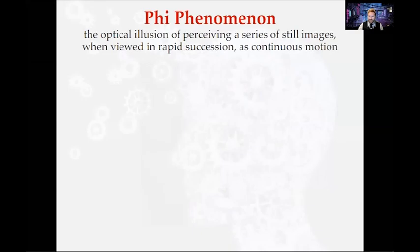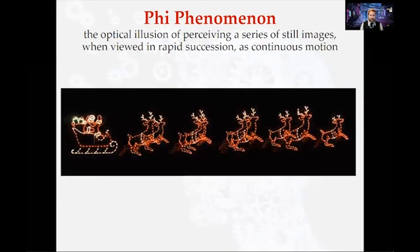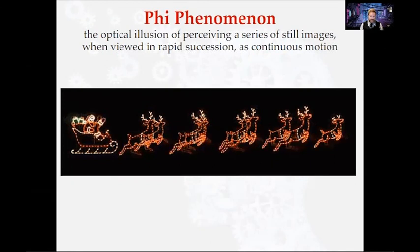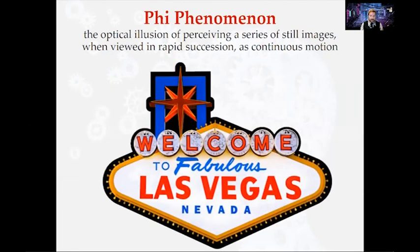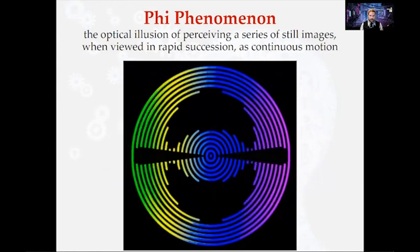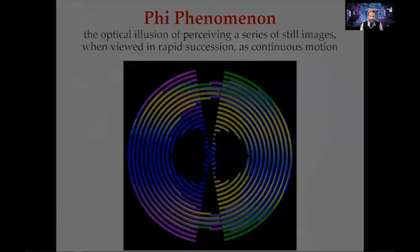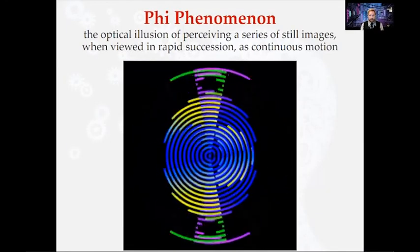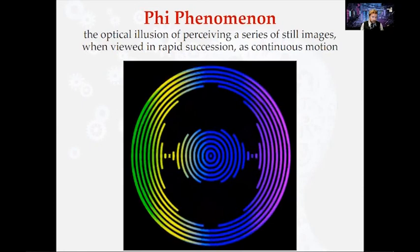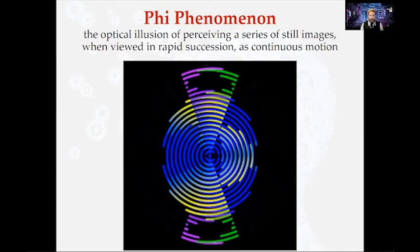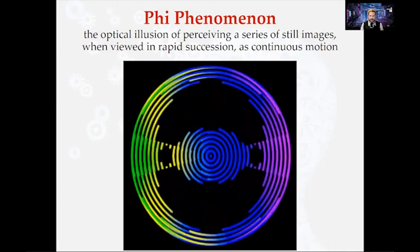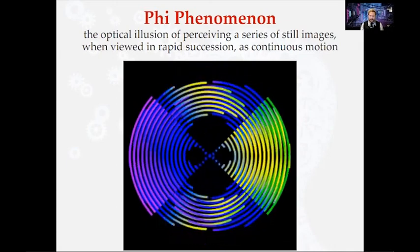Other examples of the phi phenomenon: if you've ever seen Christmas signs, we perceive the reindeer as moving and Santa as waving. Blinking lights in Las Vegas are a really good example of the phi phenomenon. The phi phenomenon is an important illusion because it's how animation works, how film works, and really how anything digital works — it's all based off of this illusion.